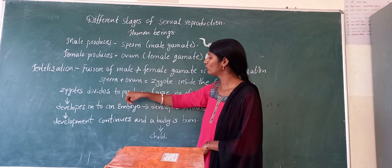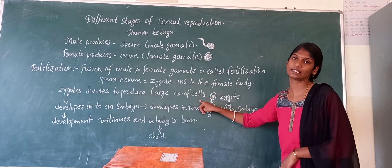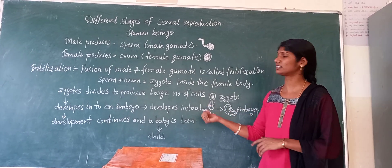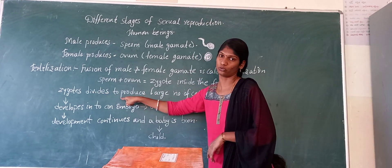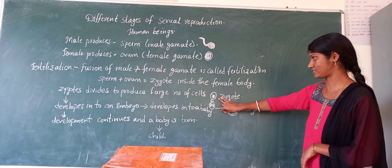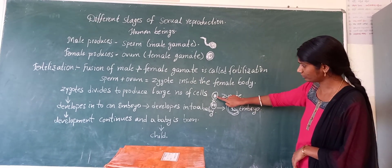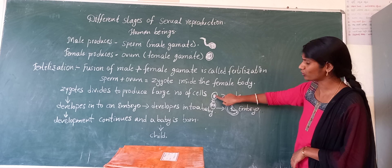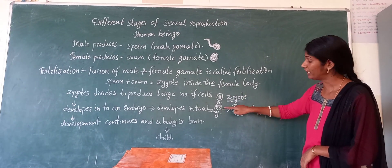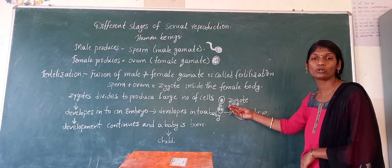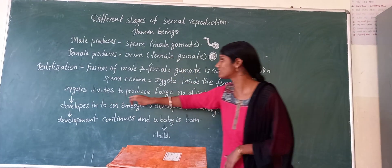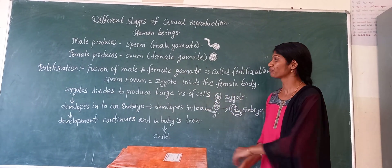This zygote is divided to produce a large number of cells, because our body has a large number of cells and all those cells are coming from this zygote. See the structure of the zygote. When we observe, the zygote has only one cell. It then divides into two cells, and in the same way it continuously divides into a large number of cells.